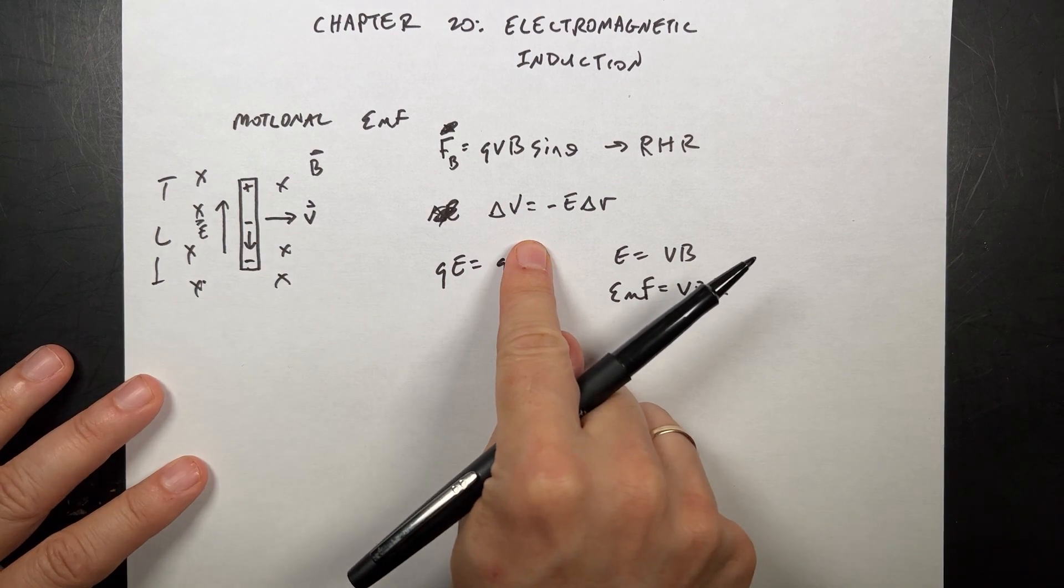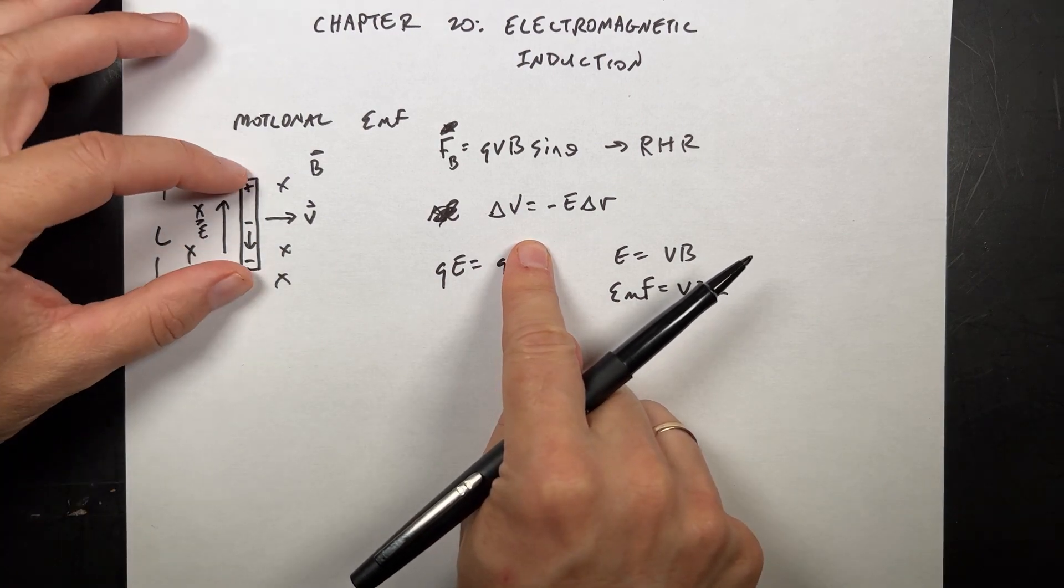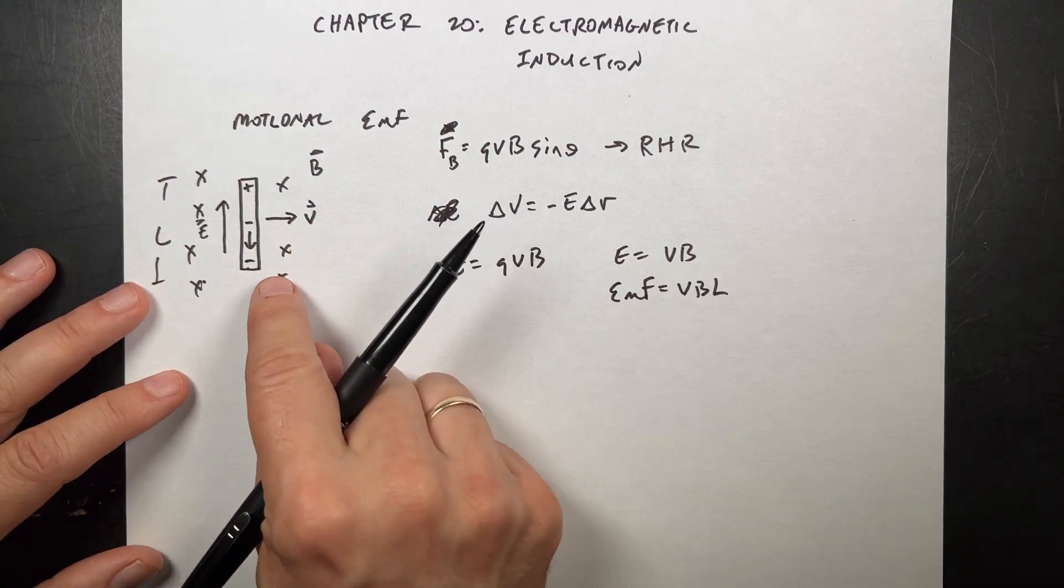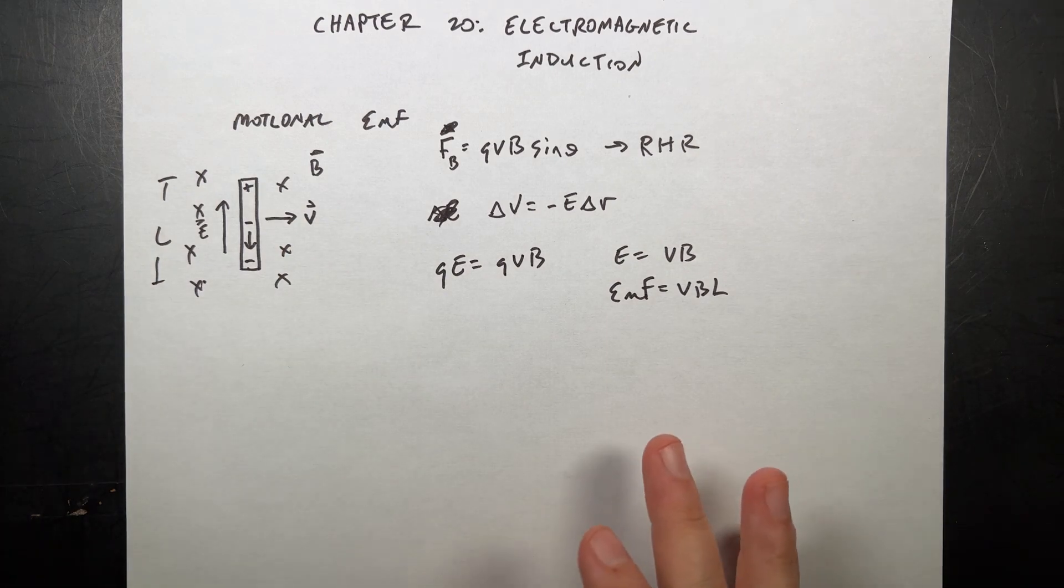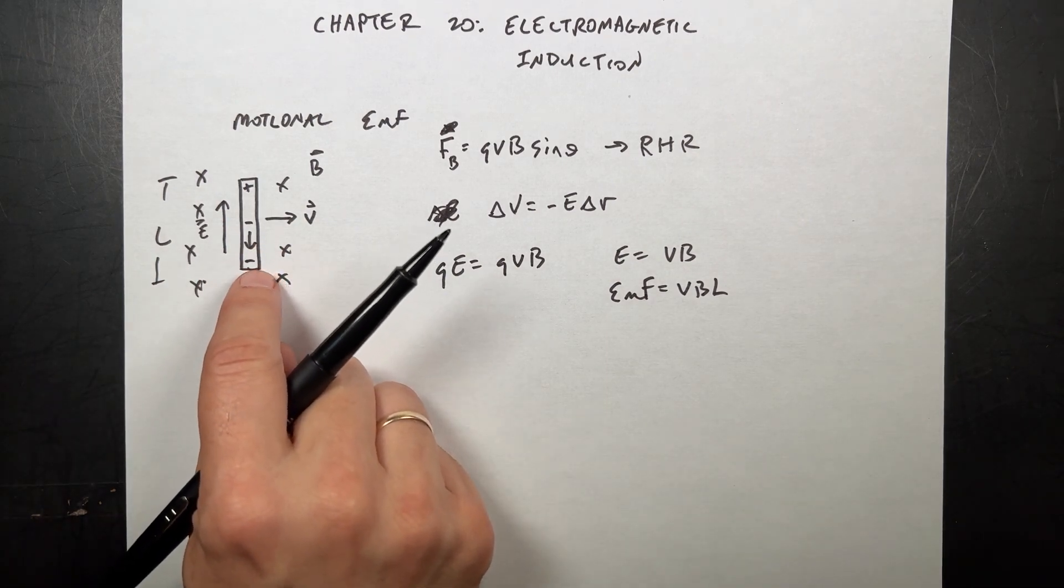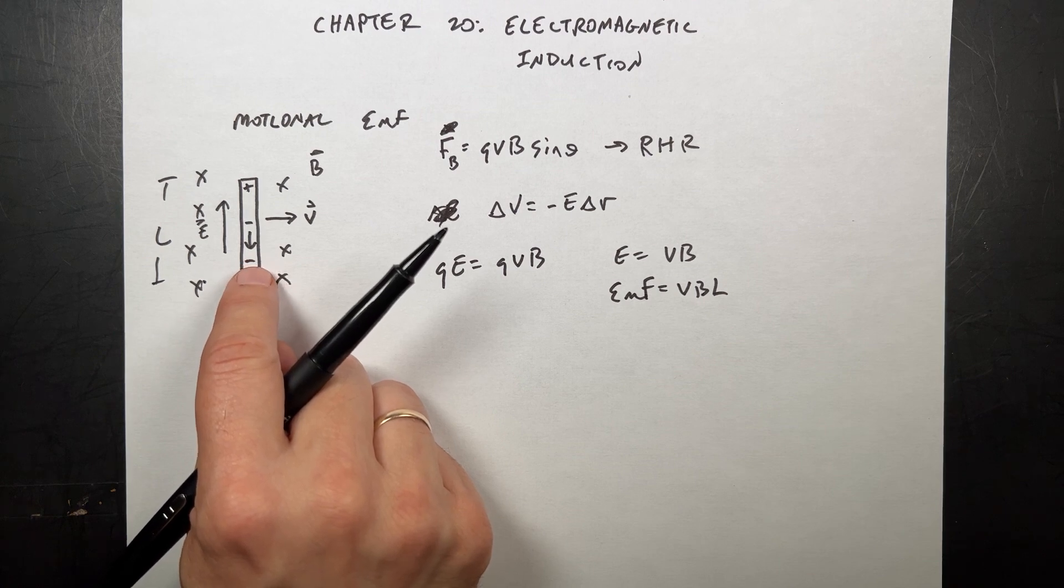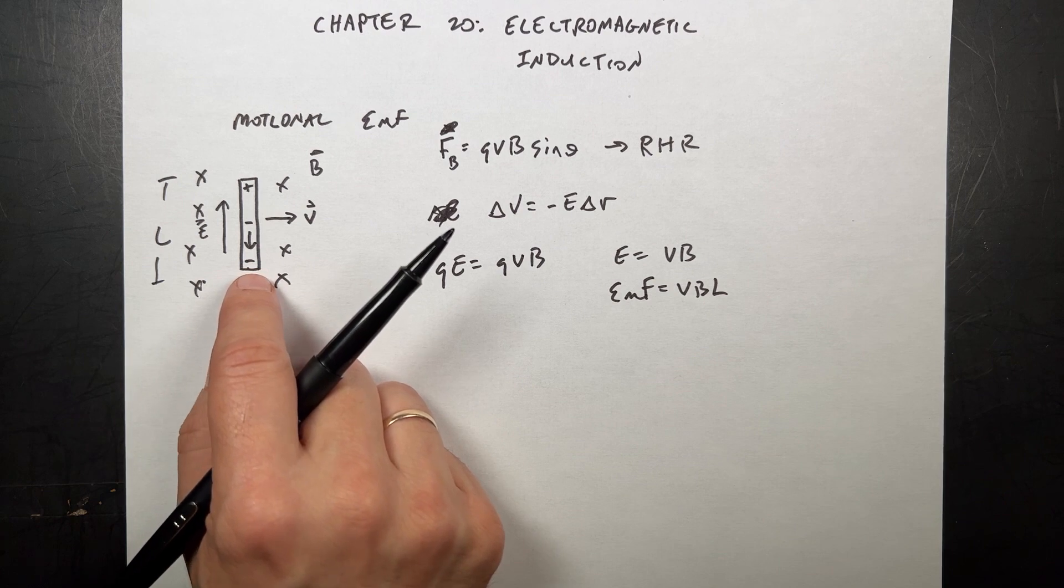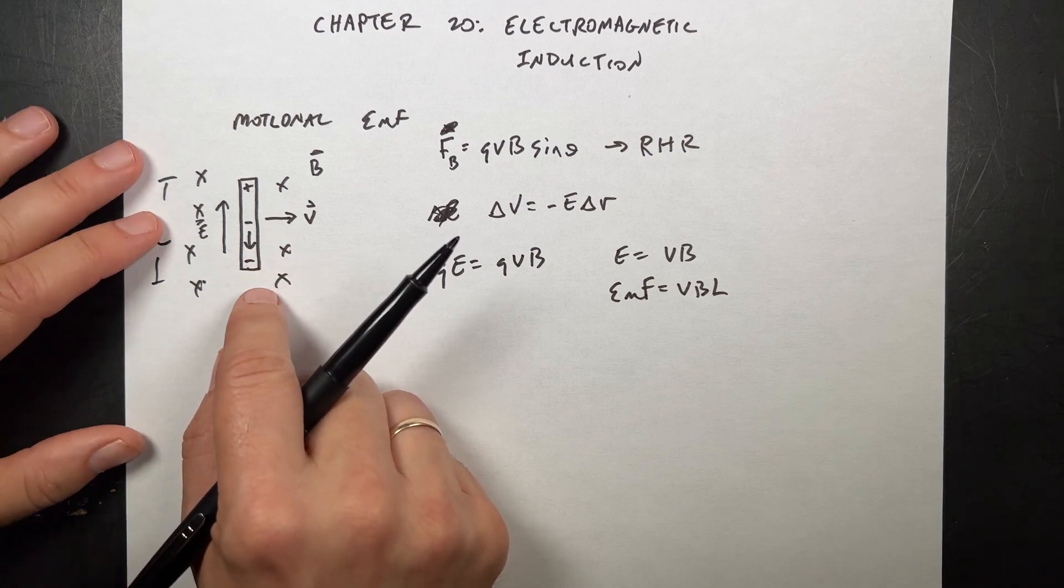So the faster I move this through there, the greater the change in potential. The greater the magnetic field, the greater the length, all those depend on the change in potential. And this is essentially one way to think about how electric generators work. It's not exactly. We're going to do a better example.